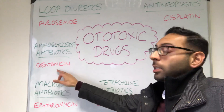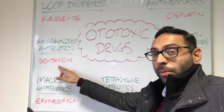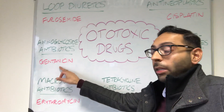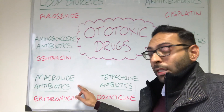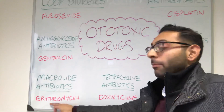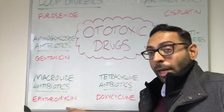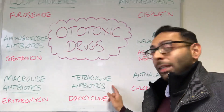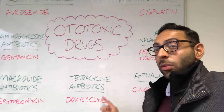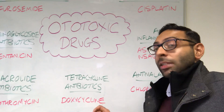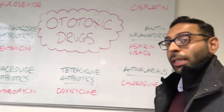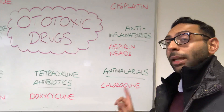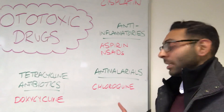There are three main types of antibiotics to remember. You've got your aminoglycoside antibiotics — gentamicin is the classic one. You have your macrolide antibiotics, things like erythromycin. And then you've got your tetracycline antibiotics, things like doxycycline, which can potentially be ototoxic.